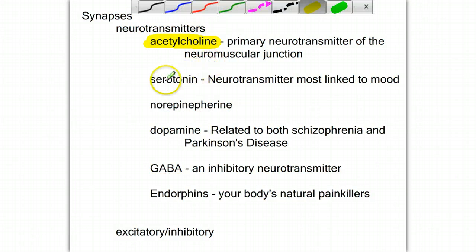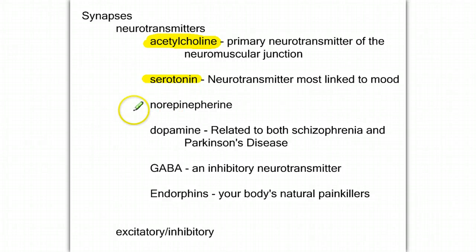Serotonin is a neurotransmitter that we most associate with mood. We know that antidepressant drugs will boost the levels of serotonin. Norepinephrine will show up later in the course. Dopamine is a neurotransmitter in different parts of the brain. It does different things, but it'll be important to us in psychology as it applies to schizophrenia and Parkinson's disease, which are both related to levels of dopamine. Schizophrenia to high levels of dopamine and Parkinson's to dopamine levels being too low.